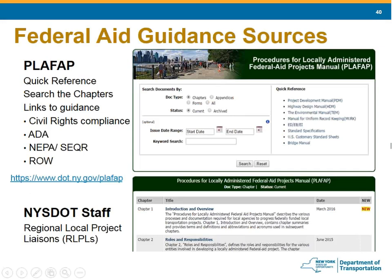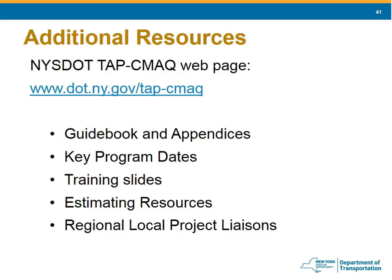This slide covers additional federal aid guidance. The PLOP-FLAP — the Procedure for Locally Administered Federal Aid Projects — is available online on the NYSDOT website and covers everything from soup to nuts across up to 19 chapters. Additional resources include the TAP-CMAQ website with the guidebook and appendices, key program dates, training slides, and estimating resources. There's an estimating tool on the website where you can input your project and get an estimated total cost for your budget submission. The regional local project liaisons are also an invaluable resource.